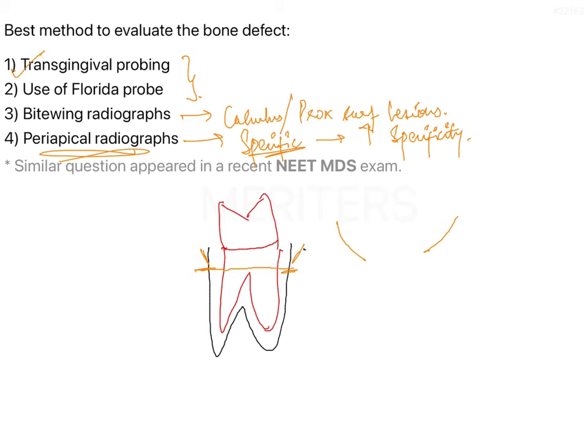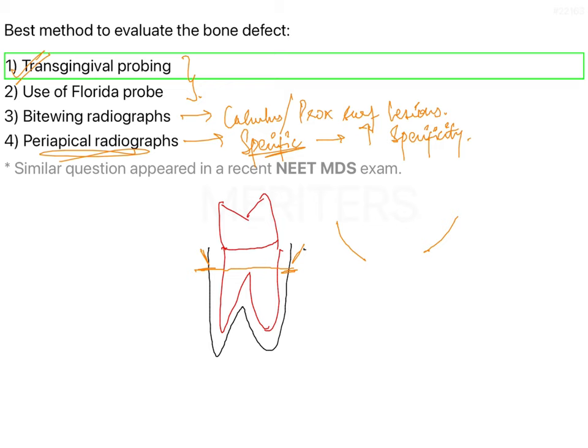Since raising a flap is not among the given options, the best answer would be transgingival probing. In transgingival probing, you anesthetize the entire arch you want to assess. You must give local anesthesia because you are literally probing all the way into the bone — you need to feel the bone with your probe. You are essentially rupturing the junctional epithelium, and without local anesthesia, the patient will be in significant pain.